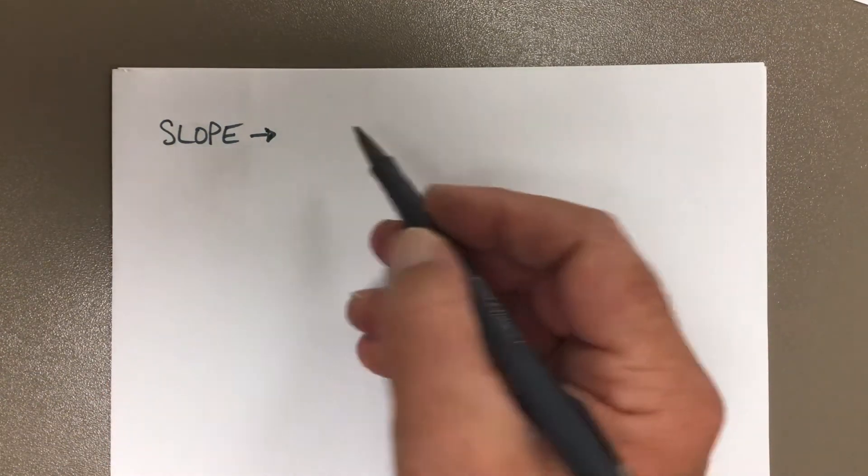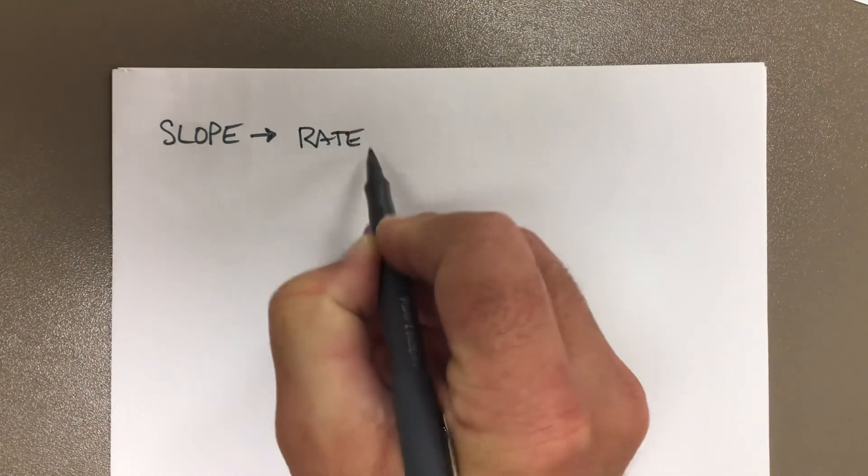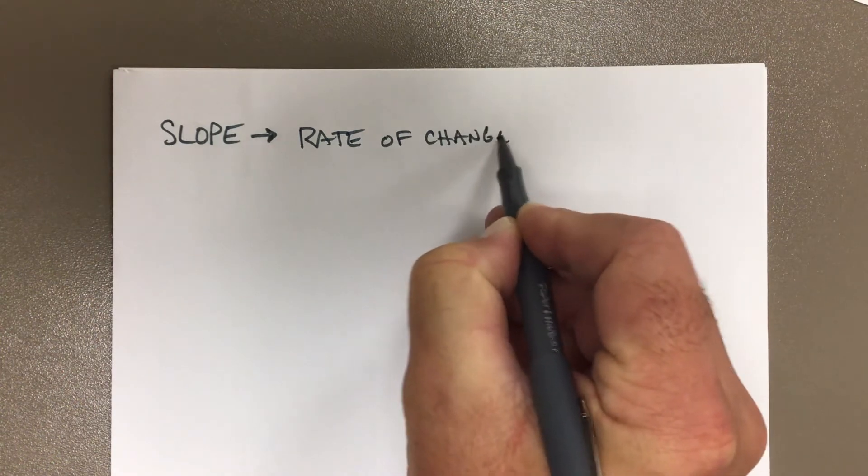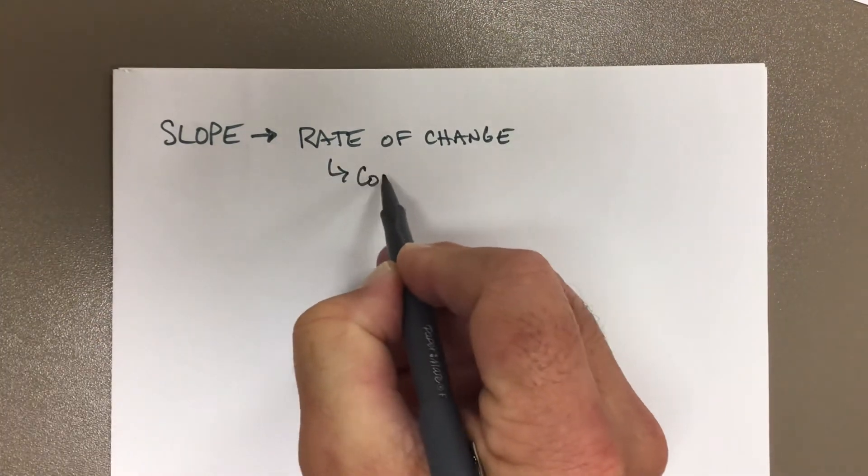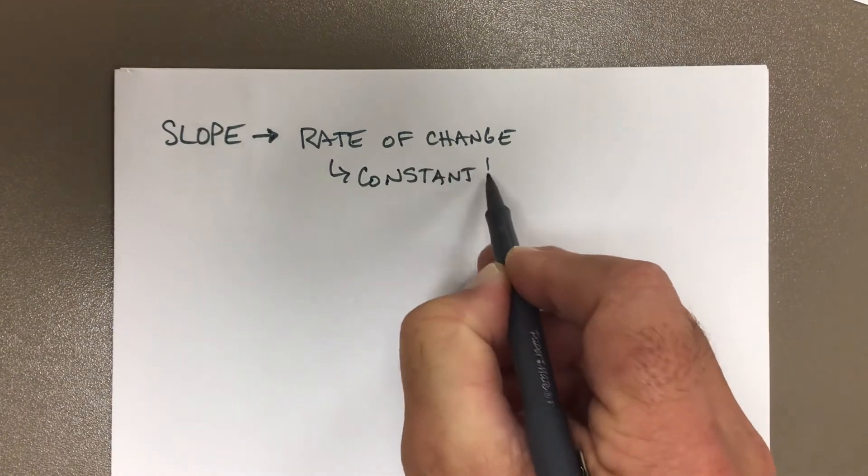Okay, first and foremost, slope—you should know that it is a rate of change. The other key word here you're going to have to remember is that it is a constant rate of change. That means...